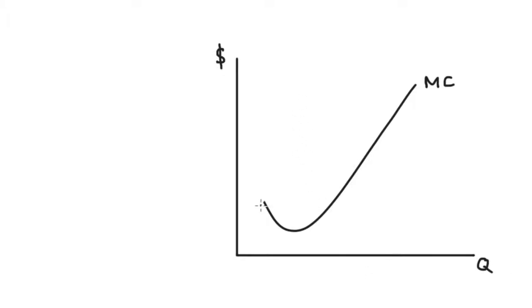Our marginal cost curve, as we trace its shape from left to right, tracks the cost of each additional unit as we increase how many units the firm is producing. We can see that initially when the firm starts producing and quantity is quite low, our marginal costs are initially decreasing, meaning that each additional unit is cheaper to produce than the last.